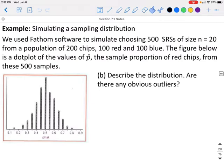Describe the distribution. Are there any obvious outliers? In this graph, it is easy to see that it is roughly symmetric.